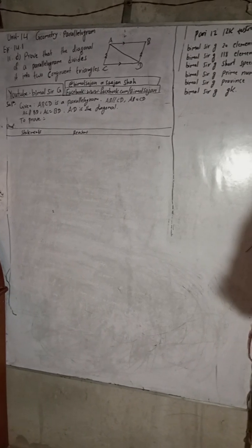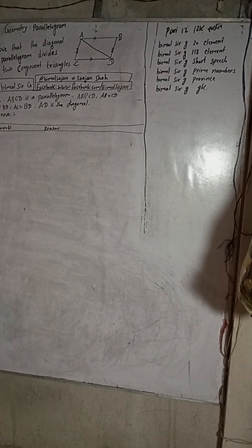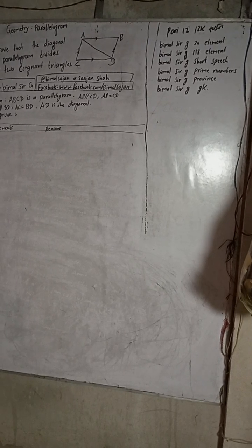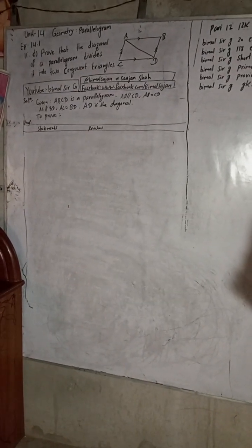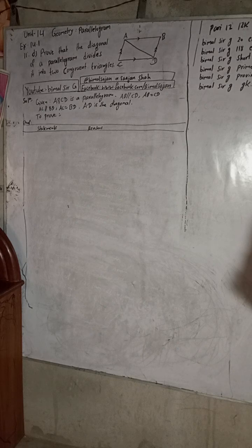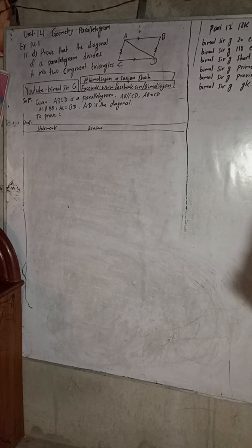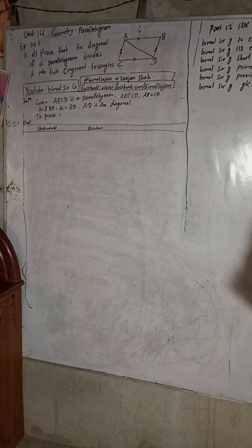In my YouTube channel playlist, you can find: Bimal Sarji 20 Elements, Bimal Sarji 118 Elements, Bimal Sarji Short Speech, Bimal Sarji Prime Number, Bimal Sarji Province, and Bimal Sarji GK. Type any of these keywords and you'll get the video at the top. Once you watch the 20 Elements or 118 Elements videos, you will never forget them because they use funny dialogues in Hindi, Maithili, and Nepali to help you remember.